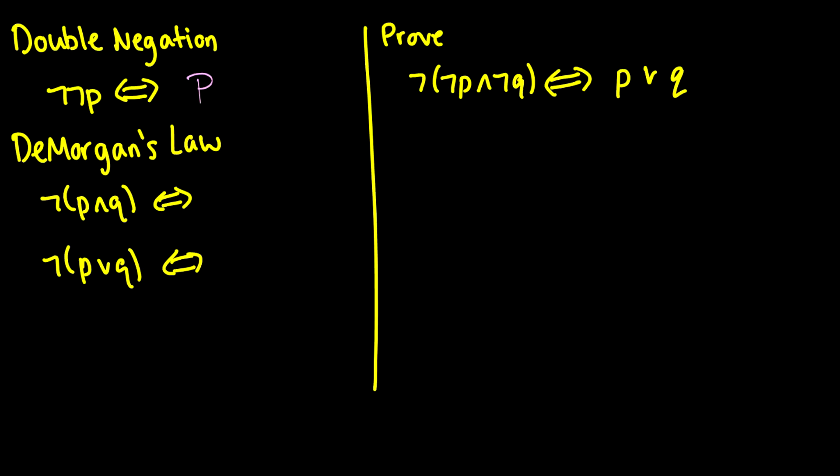Fairly straightforward. And DeMorgan's Laws are something you've seen before, where what you do is you distribute the negation in front of each statement, and then you reverse the operation. So, instead of an and, you have an or. So, not P and Q is the same thing as saying not P or not Q, and not P or Q is the same thing as saying not P and not Q, because we distributed the negation, and we reversed the sign.